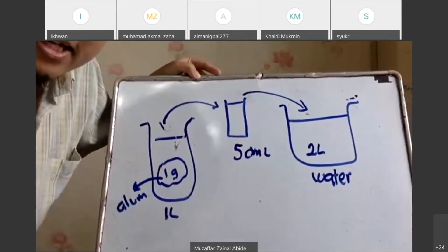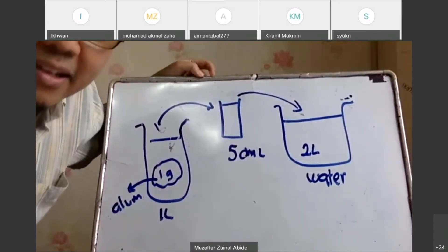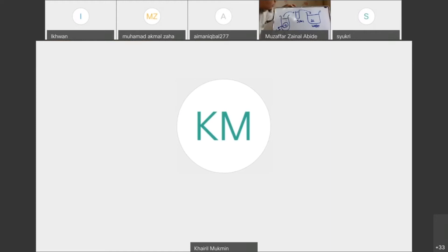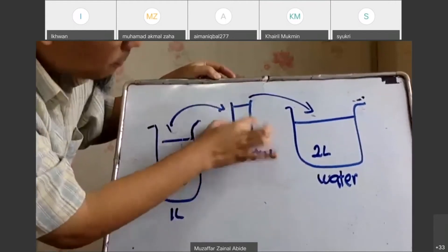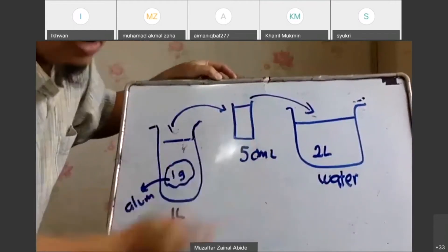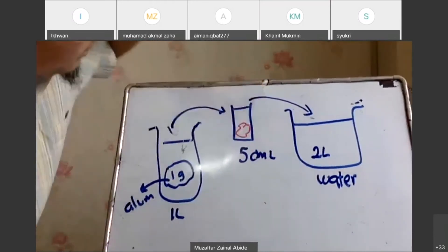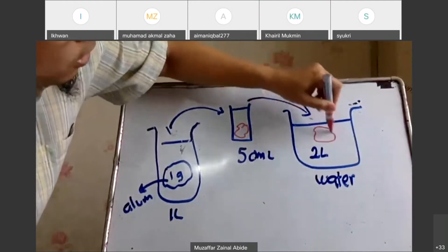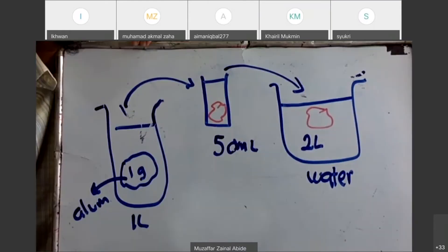So if you know 1 liter has 1 gram of alum, so you are transferring 50 ml of this solution, definitely you can know the amount of alum inside there. So if you want to snap this picture, I think it's quite handy.